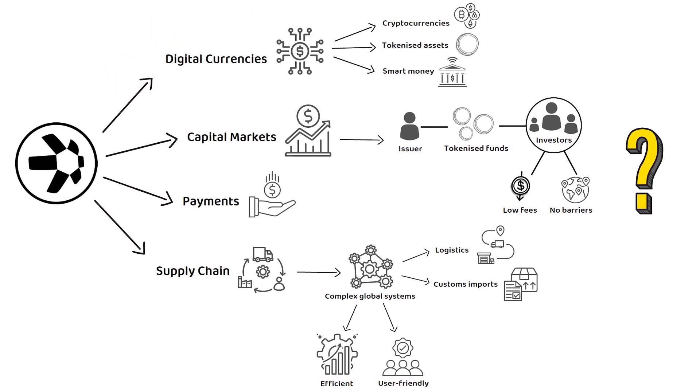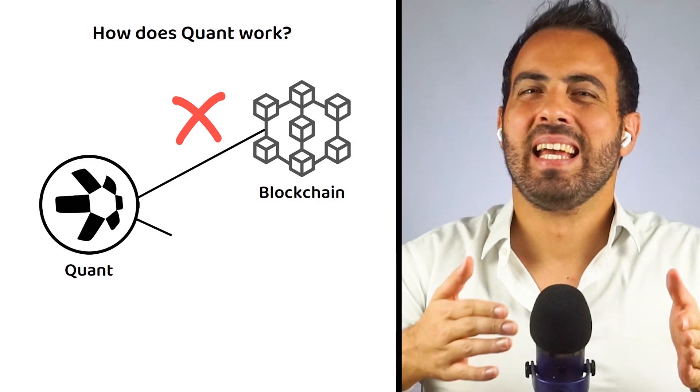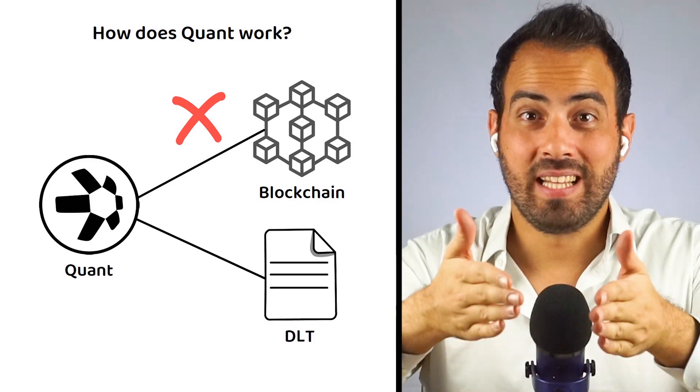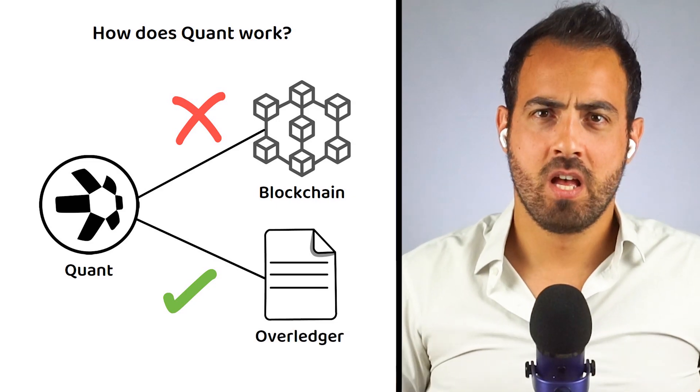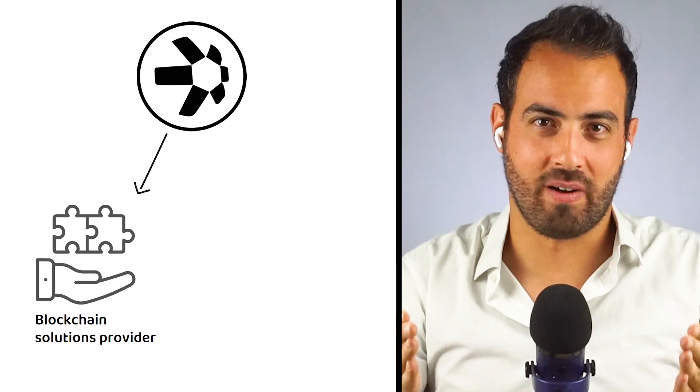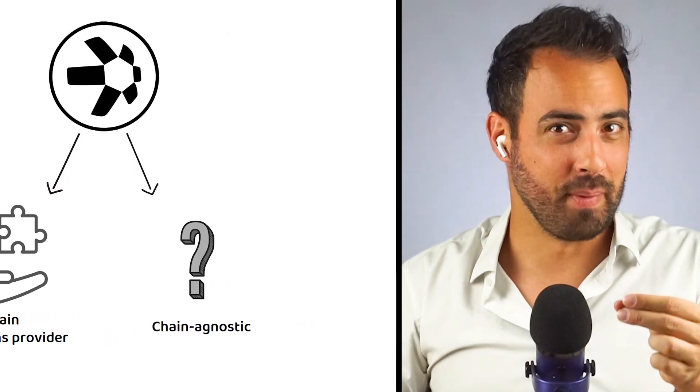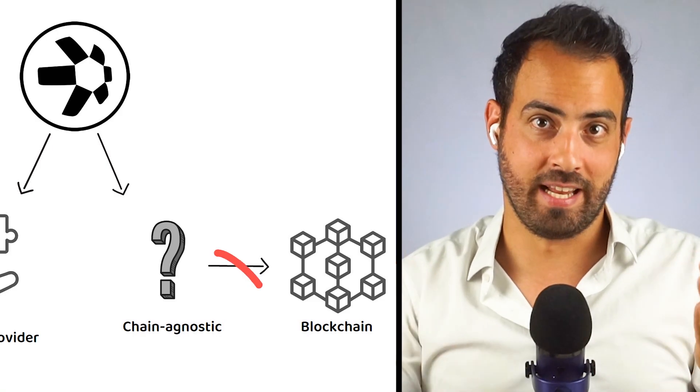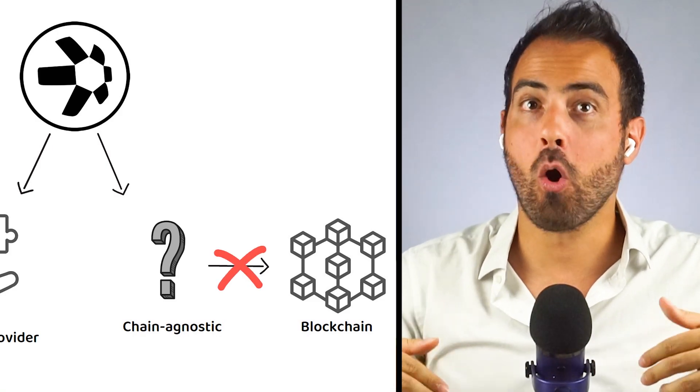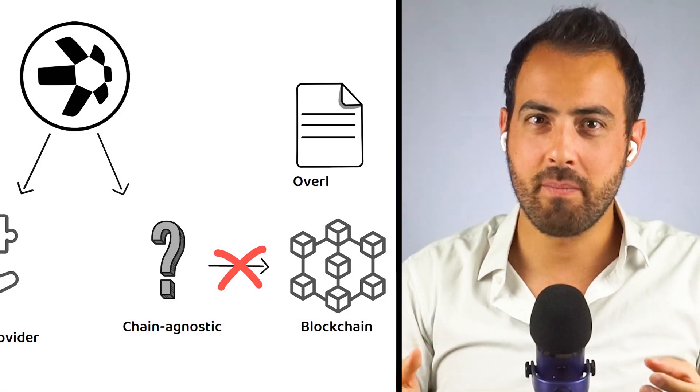But how does this all work? As I alluded to, Quant isn't a blockchain. It is a type of distributed ledger technology, in this case referred to as the over ledger. Quant describes themselves as a blockchain solution provider and describes their technology platform as chain agnostic, meaning not tied to any one particular blockchain or distributed ledger, and as sitting over the blockchain ledgers below it, hence the name, Overledger.